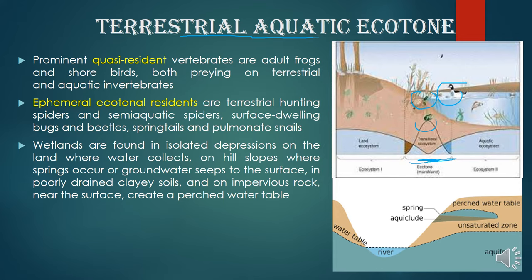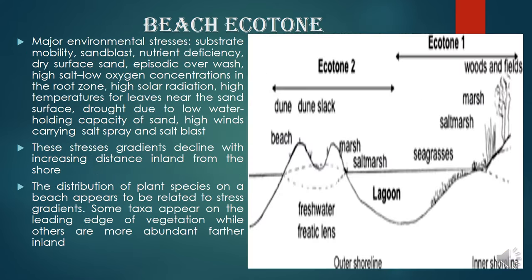In the land ecosystem, there are also insects and other animals, but their density is not as high as in this ecotonal region. In the aquatic ecosystem, we now talk about the beach ecotone. A beach is the ecotonal region between land and the sea. This beach region will have sand and different types of beach vegetation. In this diagram, we are seeing two types of ecotone: the freshwater phreatic lens system and the lagoon system.